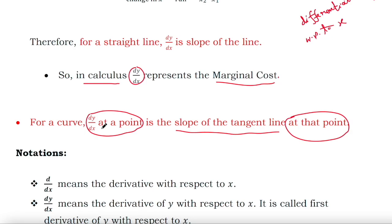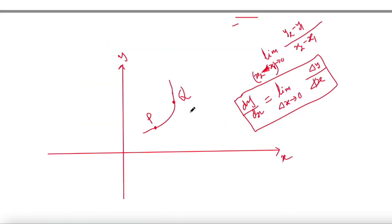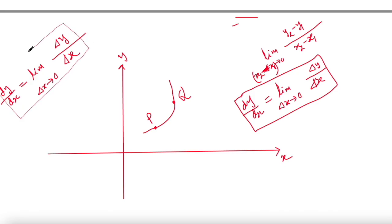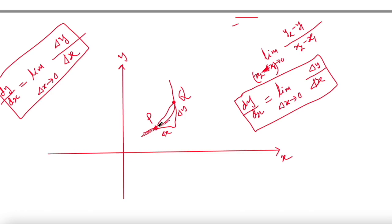Now let us understand the definition of dy/dx more mathematically. If you consider two points on this curve, the change in x is delta x and the change in y is delta y. The secant line through these two points will convert to the tangent line, because dy/dx is the slope of that tangent line.